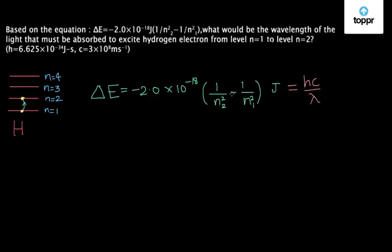In this equation we have all our variables: n2 equals 2, n1 equals 1. H and C are given to us. The only thing left in the equation is lambda, which we have to find. It is a straightforward equation.